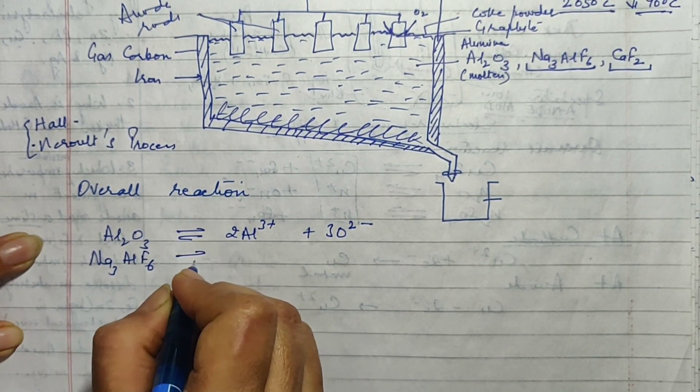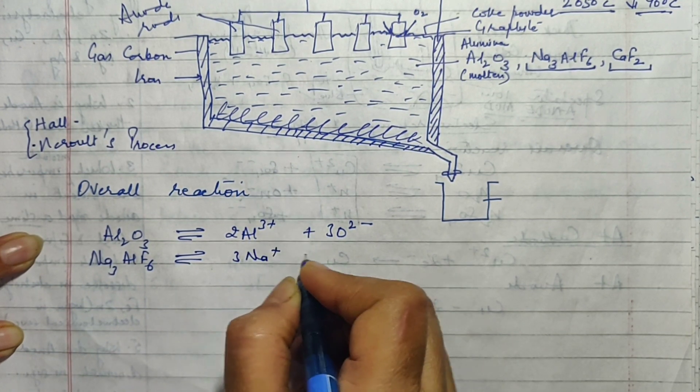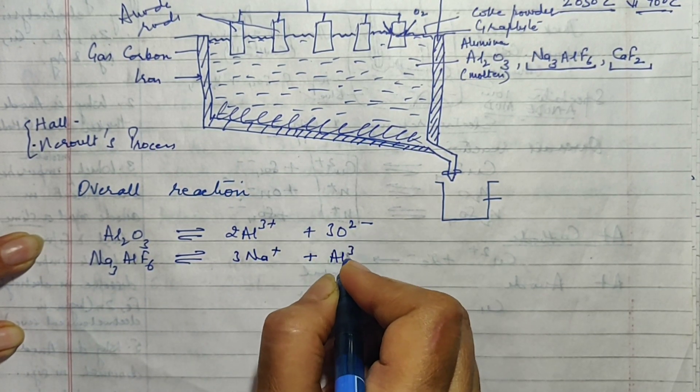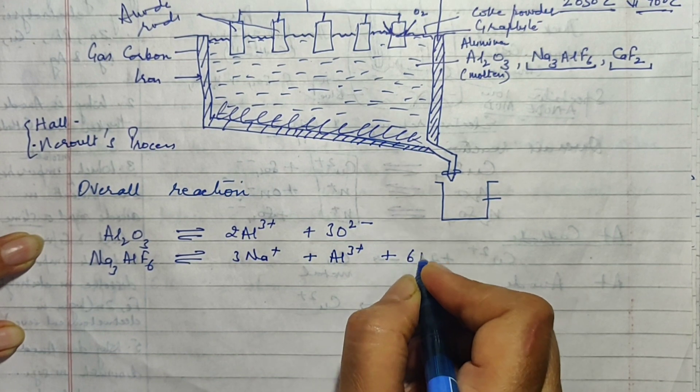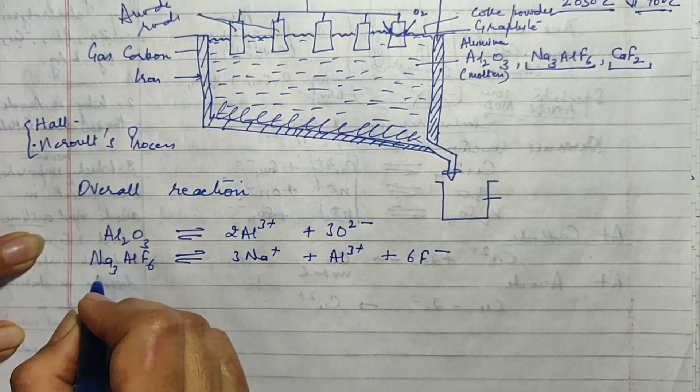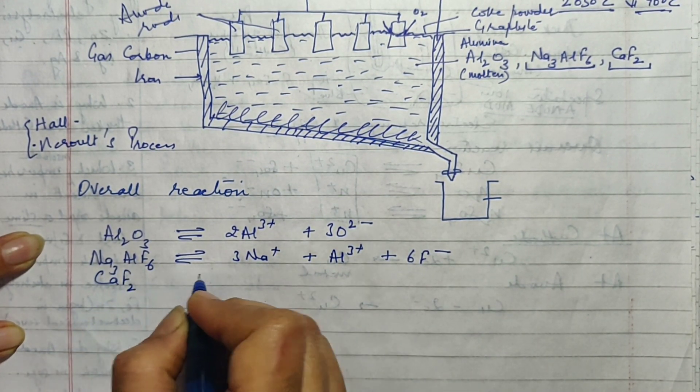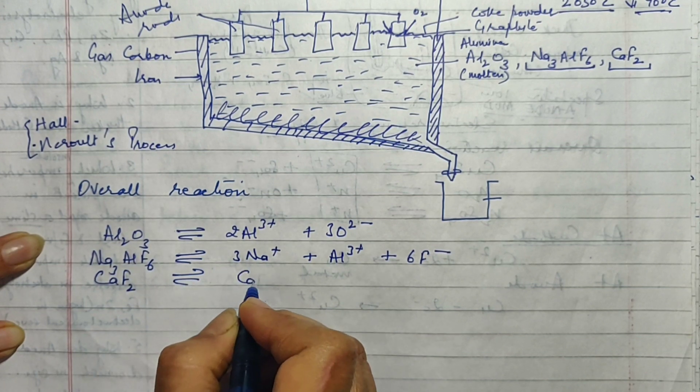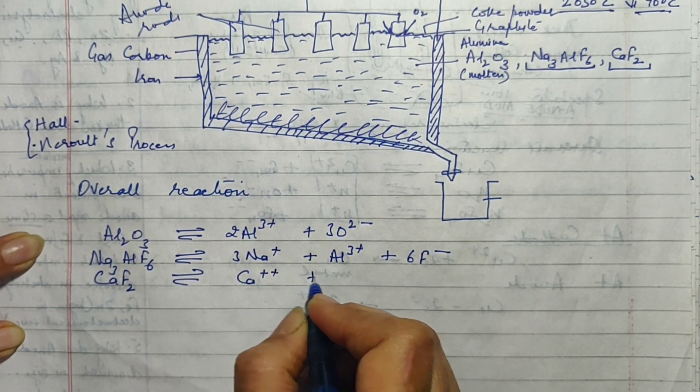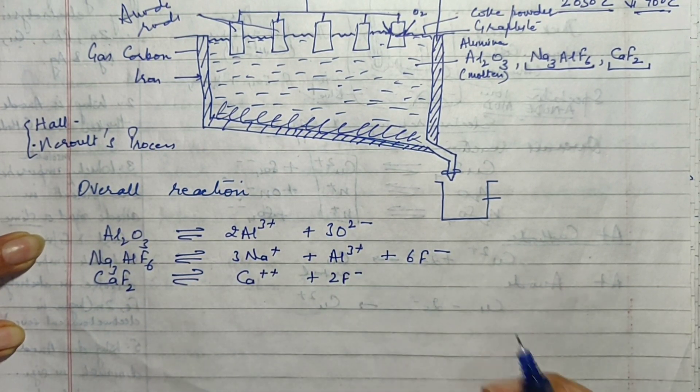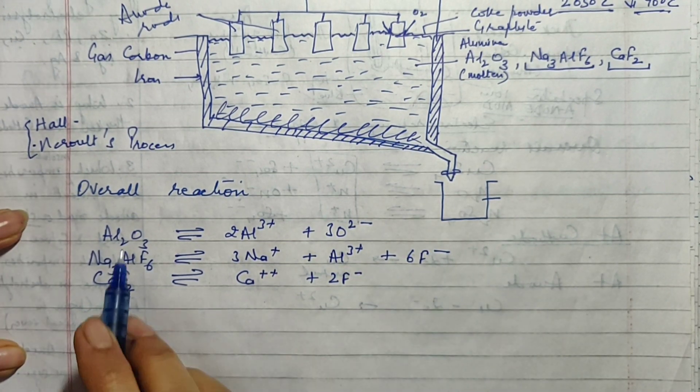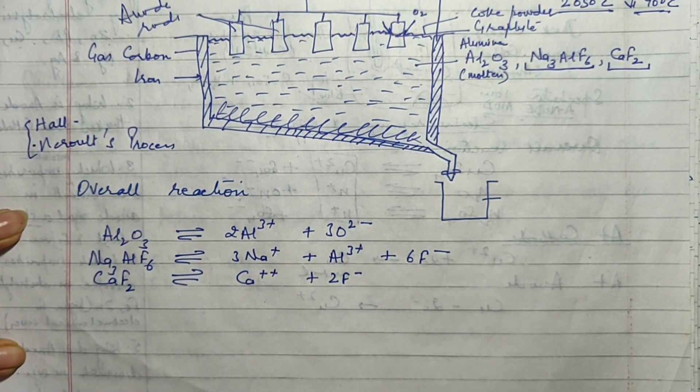Then cryolite. This one is also going to dissociate into sodium ions, aluminium ions and fluoride ions. And fluorospar calcium is also going to dissociate into calcium ions and fluoride ions. So this is the overall reaction where everything in the electrolytic cell has dissociated.